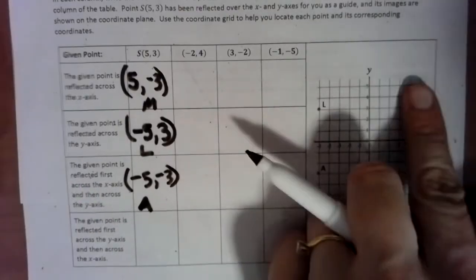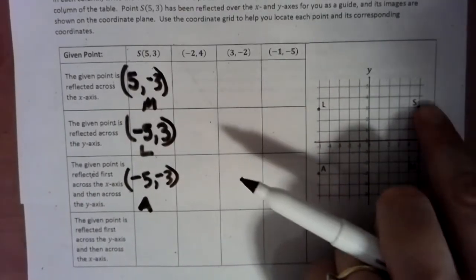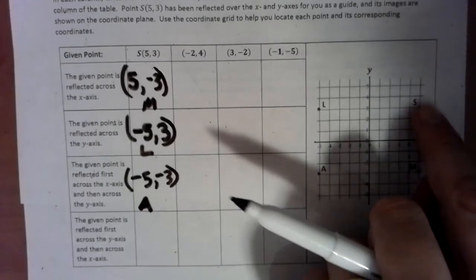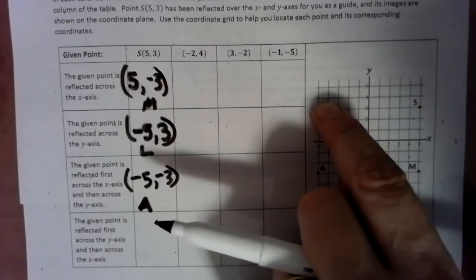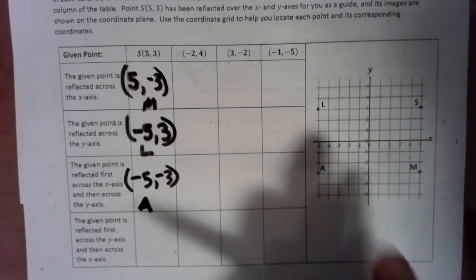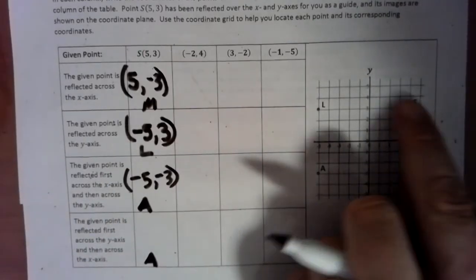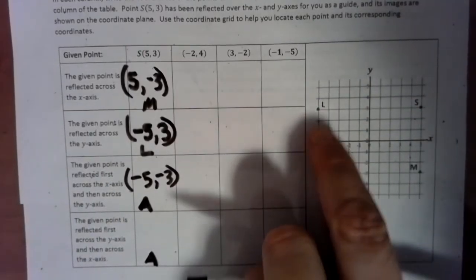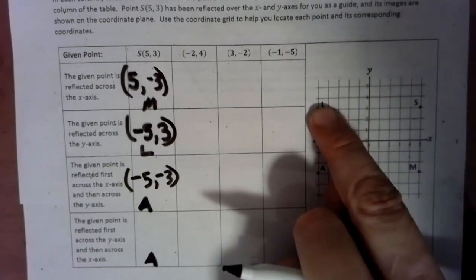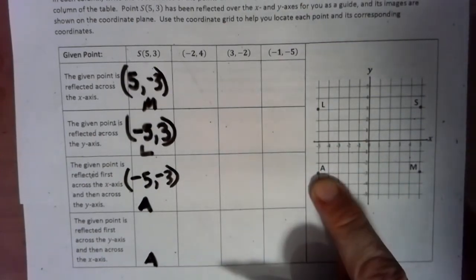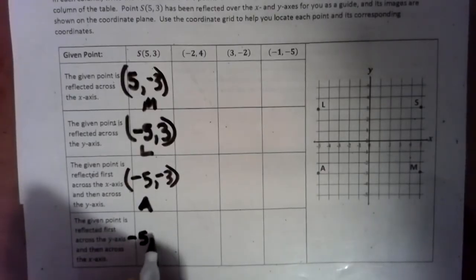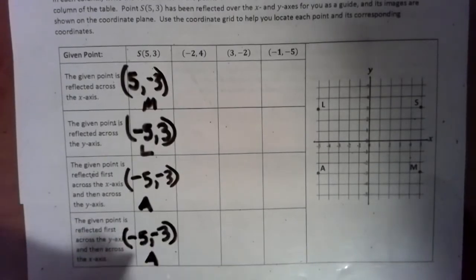Given the point is reflected first, same point, but we're going to reflect it across the y and then across the x brings us right back to that A point again. So across the y brings us to the negative 5, positive 3, and then across the x brings us down to that A point again, or that negative 5, negative 3 spot.